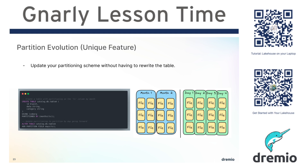You can change partitioning — as shown on the screen, going from month partitioning to day partitioning. All future data is segregated by day, with each day's files in separate files. But you didn't have to rewrite all the old data. You can always do compaction, also referred to as rewriting data files, and when you do that it will apply the new partitioning scheme — but there's no upfront cost in changing your partitioning.